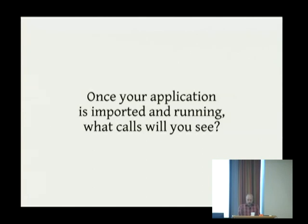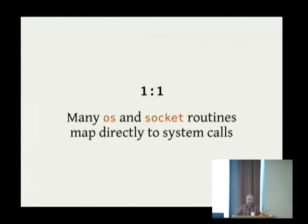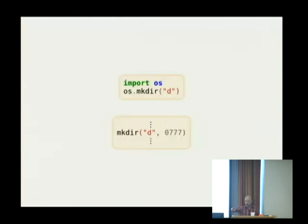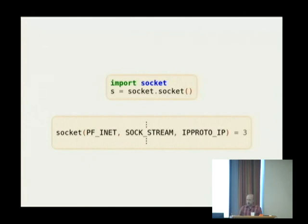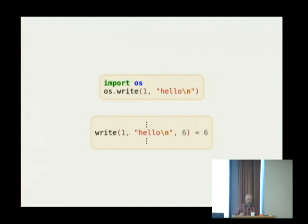Here are two PEPs you can read that will explain how import has been evolving. Once your application has imported everything it needs and is up and running, what kind of calls will you then see? In some cases there will be a one-to-one correspondence because many OS and in particular socket routines map directly to system calls. Your code in Python says mkdir — in the trace you will see a mkdir. You ask for a new socket — in the strace it will call socket. All these calls map immediately onto the equivalent system call.